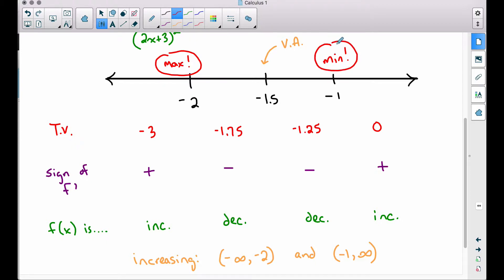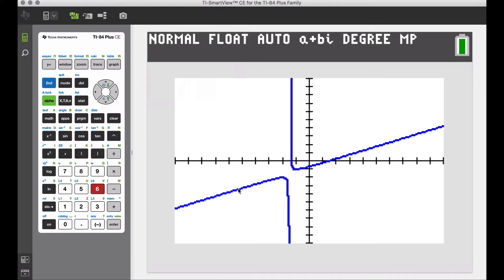Let's actually find these ordered pairs. We have an ordered pair at negative 2 comma something and negative 1 comma something. To determine that, you can just take these two values and you can plug them back into the function to actually determine the ordered pairs. But what I want to show you here is an approach on the TI-84. We have already determined that we have a maximum when x is negative 2 and we have a minimum when x is negative 1.